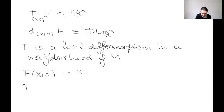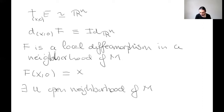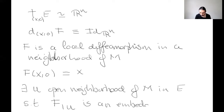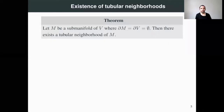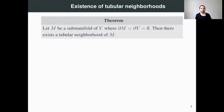As a consequence, it is possible to find an open neighborhood U of M in the total space of our vector bundle such that the restriction of f to U is indeed an embedding. That's what we wanted to prove. So we have actually a partial tubular neighborhood: f is injective over M, and we can find this U, a small open neighborhood of M, such that f continues to be injective and indeed an embedding. So we proved the existence of a tubular neighborhood for a submanifold without boundary of R^n.